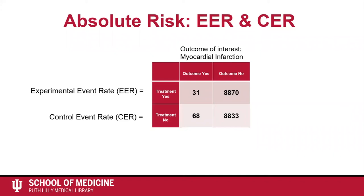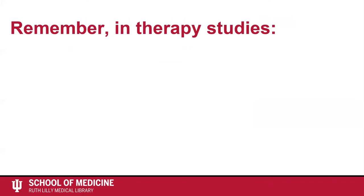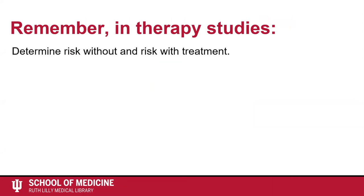Let's see how you did. The risk for the people taking the statin, or the EER, would be 31 divided by 31 plus 8,870, which equals 0.003 or 0.3%. The risk for the people taking the placebo, or the CER, would be 68 divided by 68 plus 8,833, which equals 0.008 or 0.8%. Remember, in therapy studies it is necessary to determine the risk without treatment and the risk with treatment.